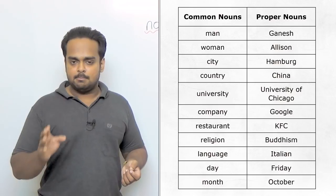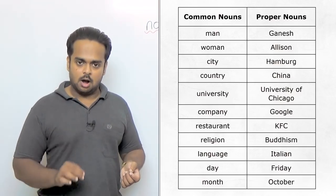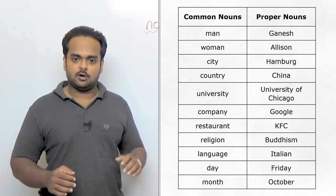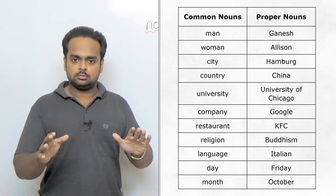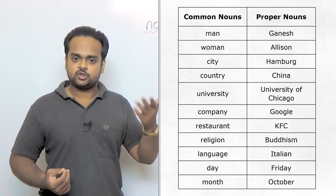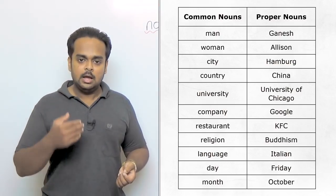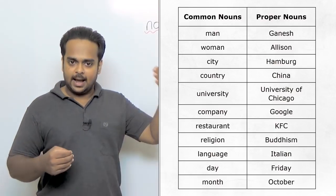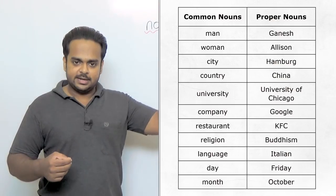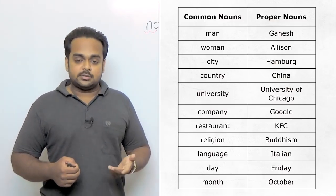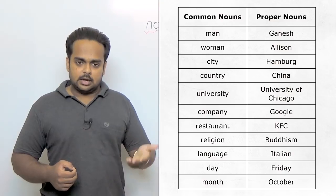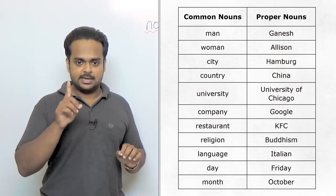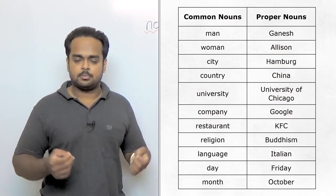For example, man is a common noun because it can mean any man. But Ganesh is the name of one man, one individual, which in this case is me. So Ganesh is a proper noun. Woman in the same way is a common noun, it could be any woman. But Alison is the name of an individual, so a proper noun. City and country are common nouns but Hamburg and China are the names of one city and one country, so proper nouns.